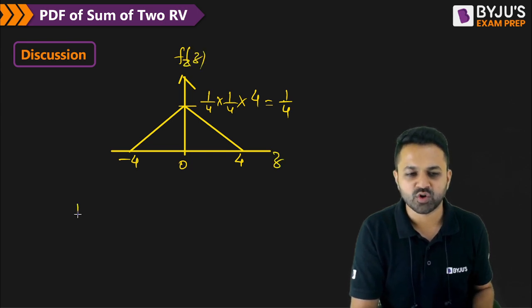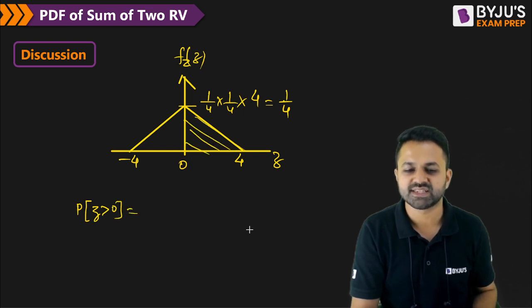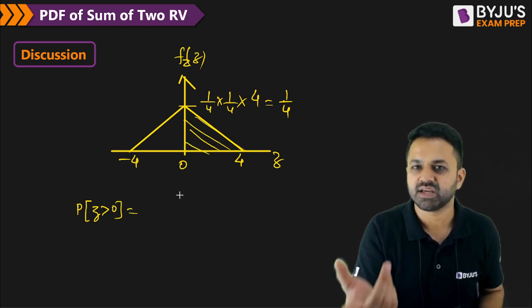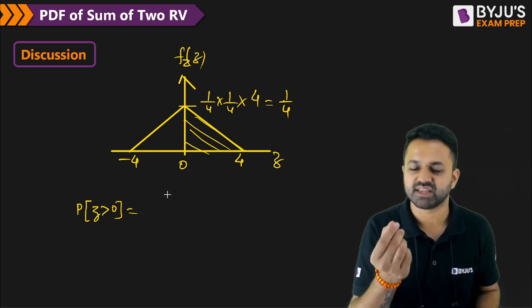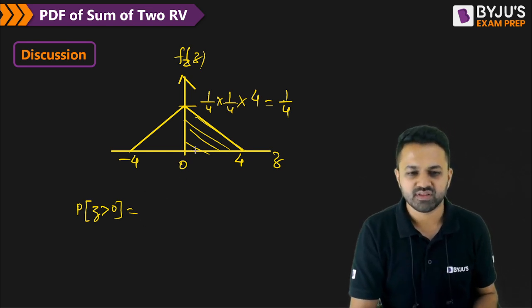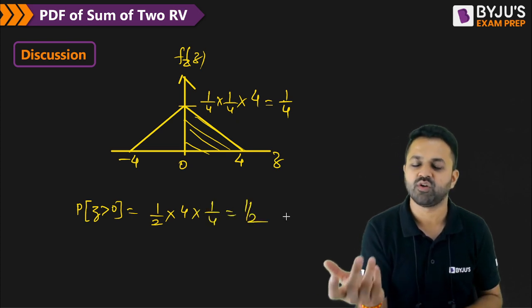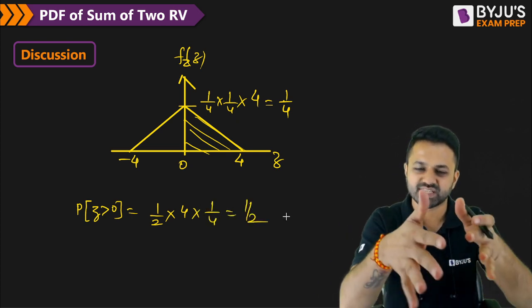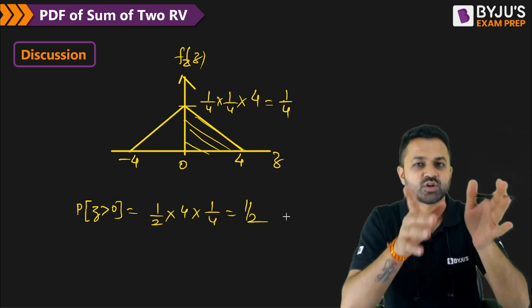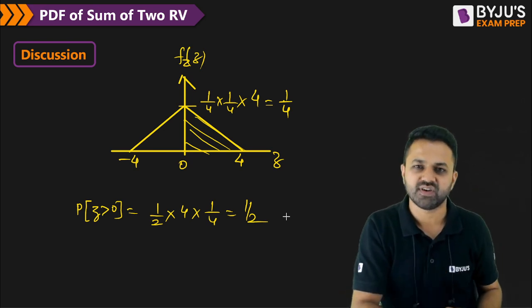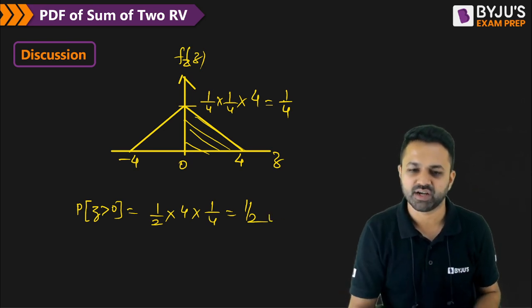Now you want to calculate the probability for Z greater than 0. That means you want to calculate this area, because the area under the PDF is the probability. The area under this region is 1/2 times base 4 times height 1/4. The result is 1/2, obviously, because it is symmetrical about the y-axis — the total area is 1, so half of the area will be 1/2.